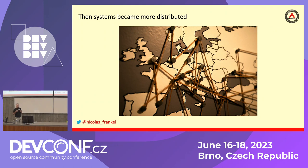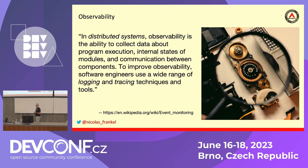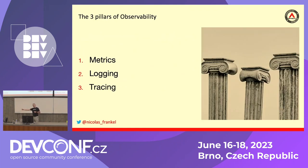Then systems became more and more distributed. So now we say we don't have monitoring anymore — now we have observability. It might be a semantic thing or it might be a real shift. I'm not an ops guy; I've been a developer and architect all my life, but I always had a keen interest in helping my ops colleagues operate my solutions. This talk will be about distributed tracing, as I think it's the hardest and newest part — but first, a reminder about the three pillars of observability.